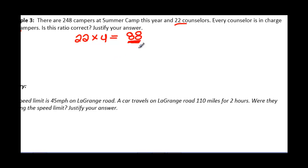Now, 88 would be the total number of campers, and that is incorrect because we need to cover 248 campers. So it says justify your answer. We can say it would only cover 48 of the campers, and there would be a lot left over.